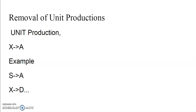What do you mean by unit production? The production of the form X produces A is known as unit production — that is, a single variable at the right-hand side. I repeat: only one variable at the right-hand side. A few examples are S produces A, X produces D, and so on.